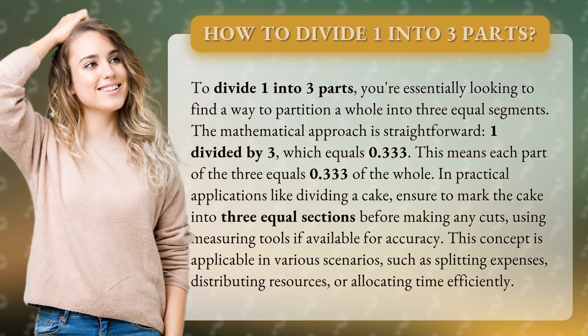1 divided by 3, which equals 0.333. This means each part of the 3 equals 0.333 of the whole. In practical applications like dividing a cake,